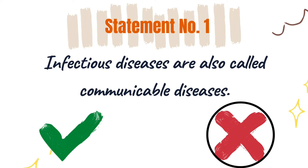The word 'contagious' means infectious, communicable, transmissible, transferable, or spreadable. Communicable diseases are infectious diseases that are easily spread through contact with other people or with animals. For example, UTI or urinary tract infection is an infection but it is not communicable — it is not transferable, it is not contagious.